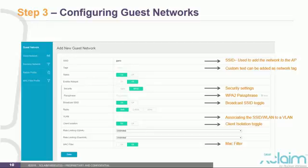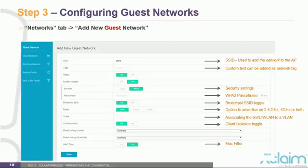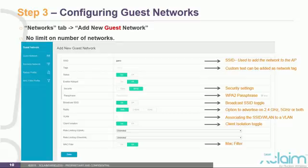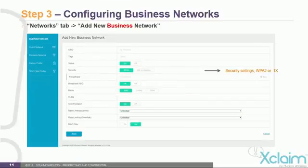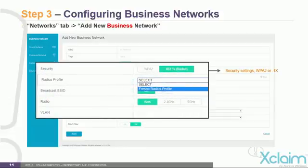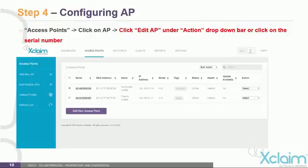Step 3 is to create your network. You can add a new guest network or a business network. To add a network, select the Networks tab and click on Add Network. You'll configure your SSID name, a network tag, and security settings such as passphrase, which radio or radios to use, VLANs, and whether to enable client isolation. There is no limit on the number of networks you can create. For a business network, security settings can be WPA2 or 802.1x, which works with a RADIUS server. If you select 802.1x, you'll need to select a RADIUS profile you create before configuring this network SSID.